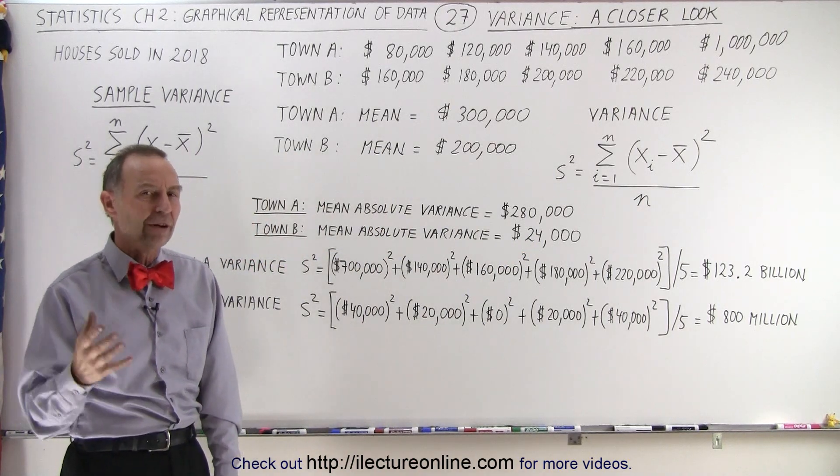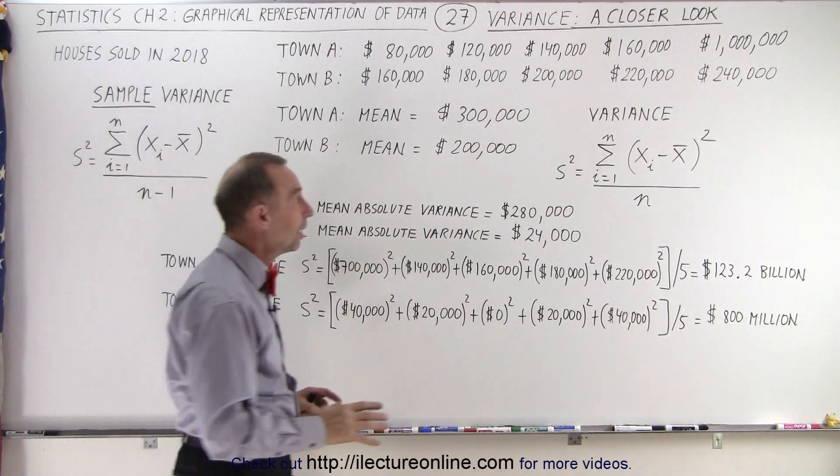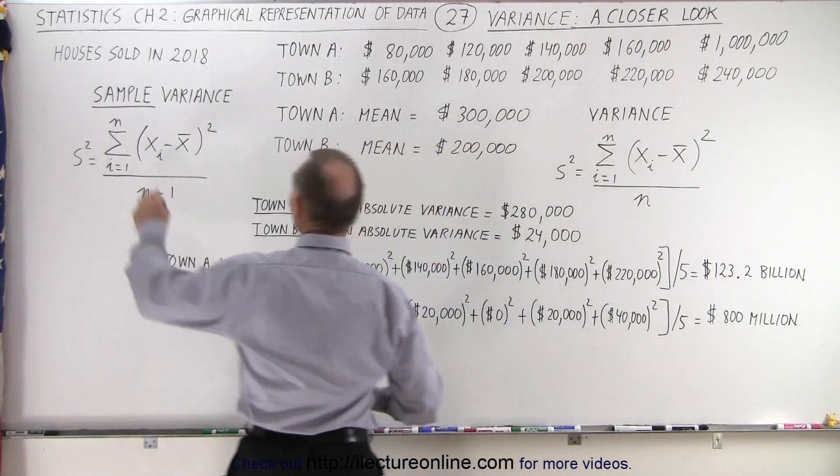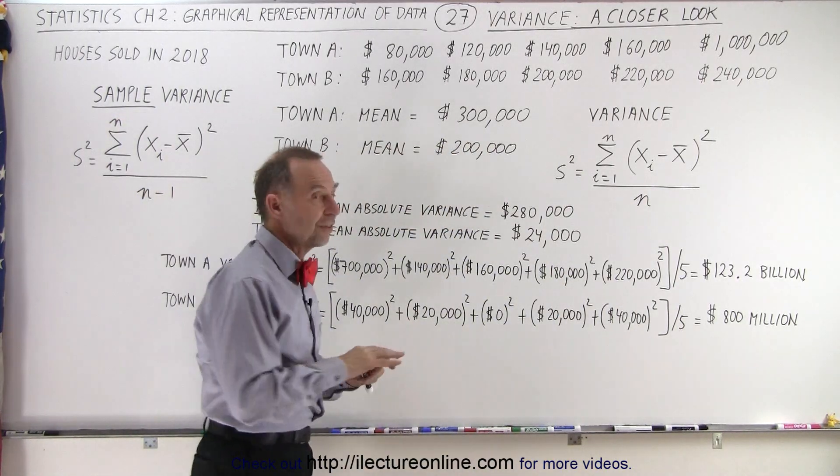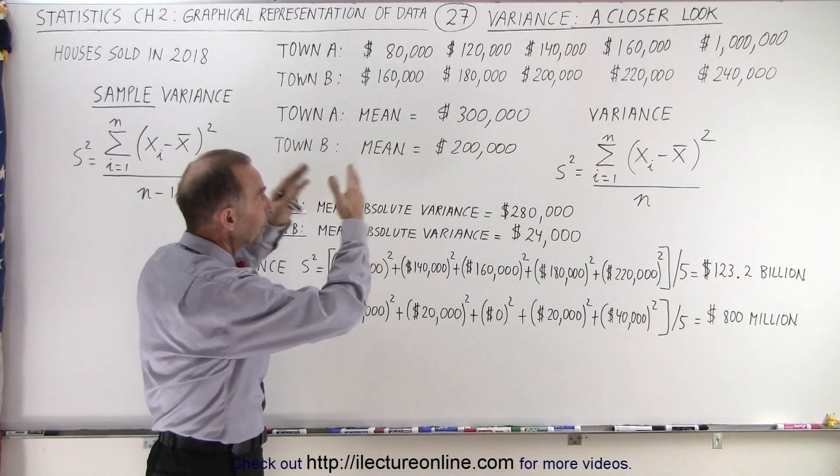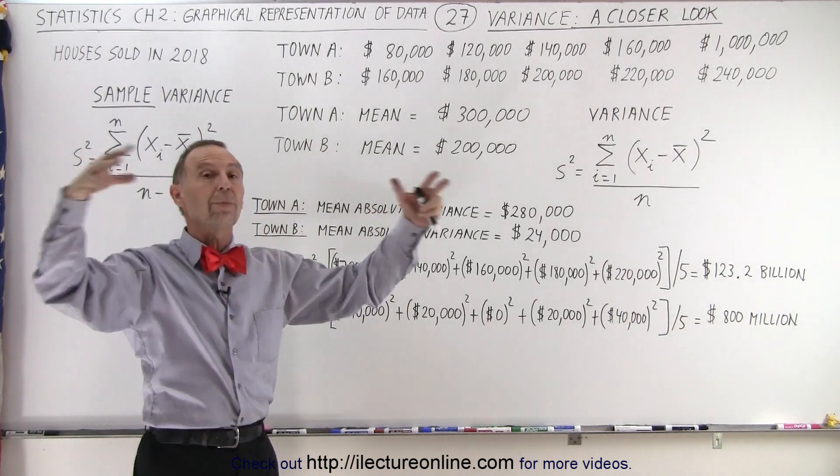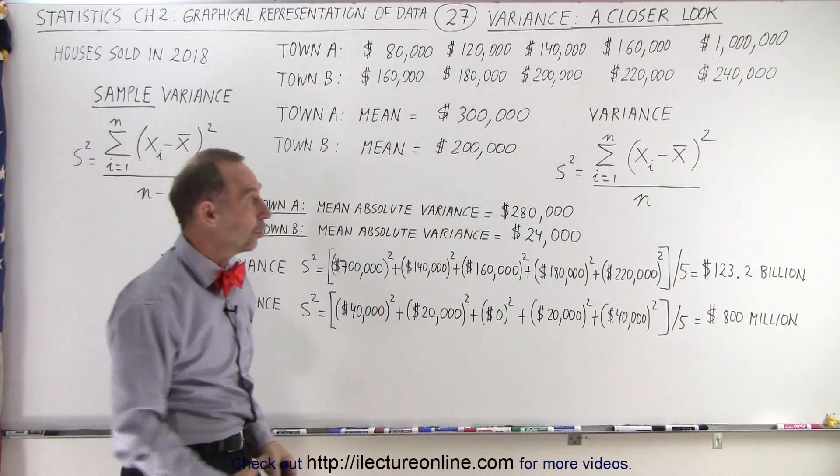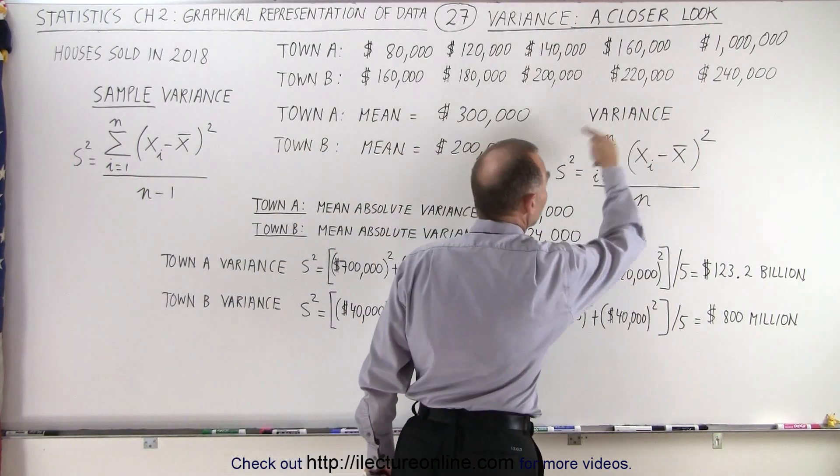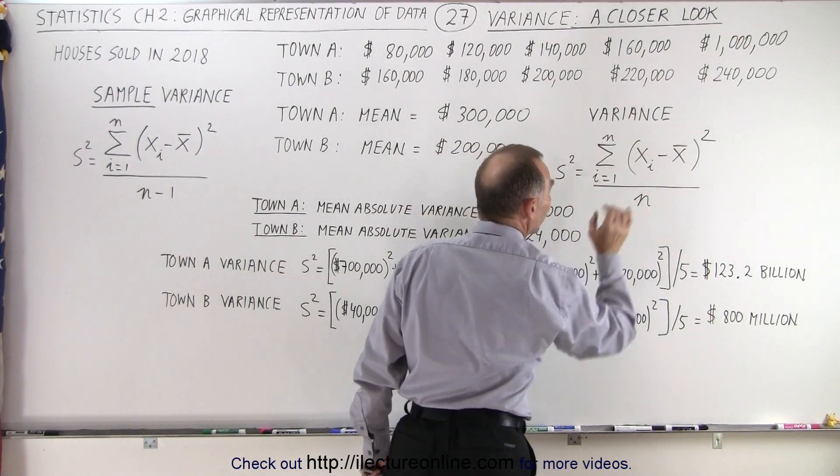But now what do we mean by the variance? Remember the difference again between the variance and the sample variance. If we have the values that we're dealing with is the total population, all of the houses sold, then we use this calculation and we do divide by the total number value n.